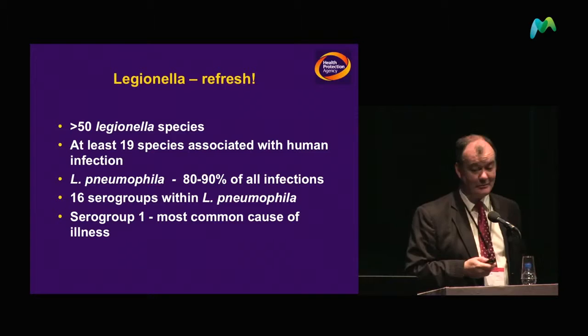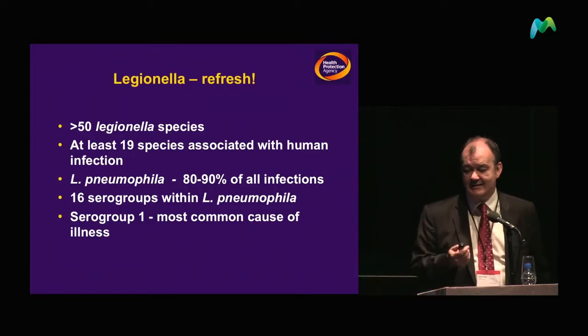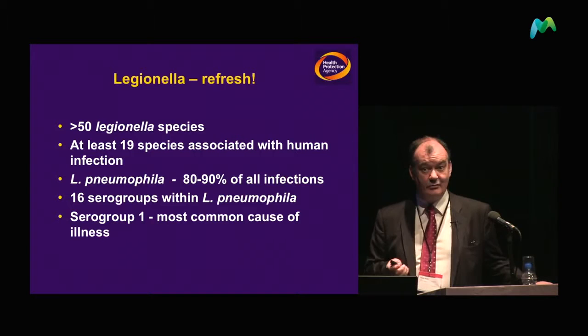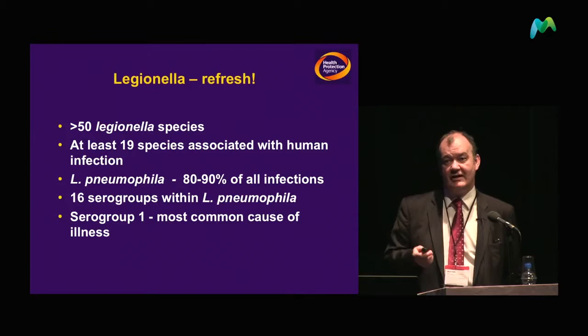There are over 50 Legionella species, some associated with human disease. Legionella pneumophila serogroup 1 is the one we're very interested in, and is believed to be responsible for about 80 to 90% of all infections. Of those, it's Legionella serogroup 1 — which is one of 16 serogroups — that we find to be the commonest cause of Legionella disease.